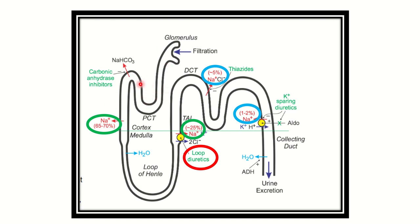Here we can see that in the proximal convoluted tubule, sodium reabsorption occurs at 65 to 70% — so maximum sodium, that is 65 to 70%, is absorbed from the proximal convoluted tubule. In the thick ascending limb of the loop of Henle, about 25% sodium reabsorption occurs. In the distal convoluted tubule, 5% sodium reabsorption occurs. In the collecting tubule and collecting duct, 1 to 2% of the sodium is reabsorbed.